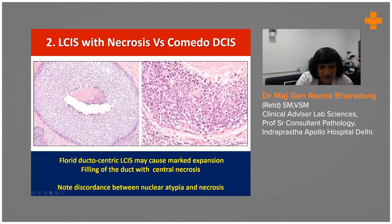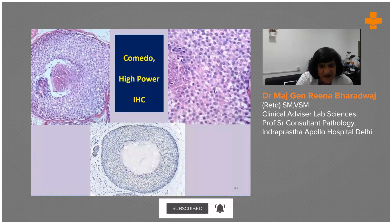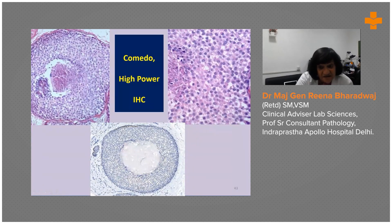There is a florid ductocentric LCIS with marked expansion filling the duct, and here we call it central necrosis — we don't use the word comedo. There is a complete discordance between the amount of necrosis and the nuclear grade. This is very monomorphic. In comedo DCIS there is comedonecrosis with nuclear pleomorphism. High-power views confirmed on e-cadherin show monomorphic cell types with necrosis but with intracytoplasmic vacuoles, and the cells are nicely separated from each other.